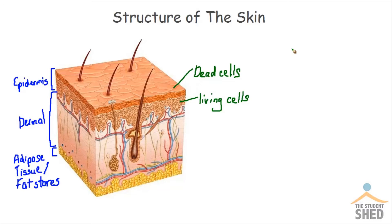The epidermal layer is important because it protects your body from heat, UV rays, germs, and also dangerous chemicals. It also protects the inner layers of the skin as we move into the second layer, which is the dermal layer.